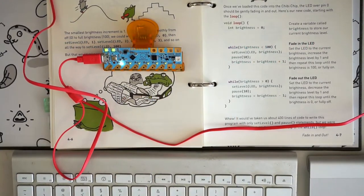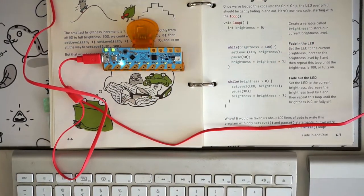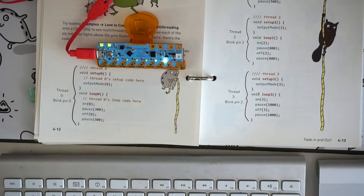In this exercise, we learn how to make our lights fade gradually in and out. We also learn an easy way to control multiple lights at the same time. Multi-threading!